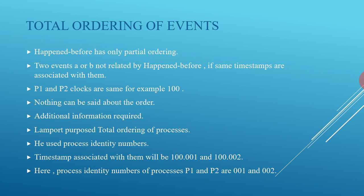Lastly, total ordering of events: happened-before provides only partial ordering, not full ordering. If two events A and B have the same timestamp, nothing can be said about their order — additional information is required. Lamport proposed total ordering of processes using process identity numbers. The timestamp associated with them would be 100.001 and 100.002, where the process identity numbers of P1 and P2 are 001 and 002 respectively.